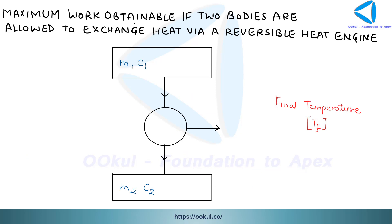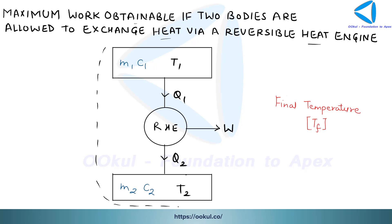The second case is the maximum work obtainable when two bodies exchange heat via a reversible heat engine. In the previous case the bodies exchanged heat directly, but now they exchange heat through a reversible engine. Body one has mass m1, specific heat c1, temperature T1; body two has mass m2, specific heat c2, temperature T2. The engine receives Q1 from body one, rejects Q2 to body two, and produces work W. The final temperature both bodies attain is Tf.